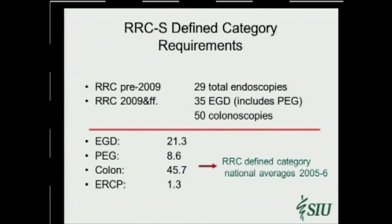A couple of years ago the RRC raised the numbers in the United States for expectations in the defined categories for graduating residents. Residents now need to finish with a minimum of 35 upper endoscopies and 50 colonoscopies—numbers fairly close to SAGES guidelines, and in fact similar to what most surgery residents were graduating with nationwide before those requirements were enacted.